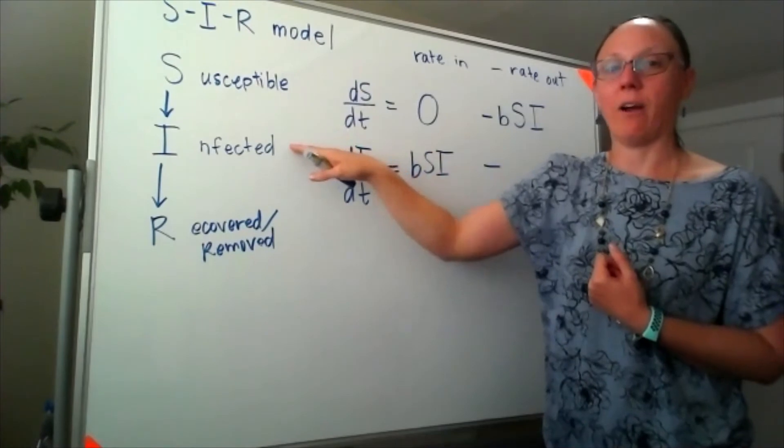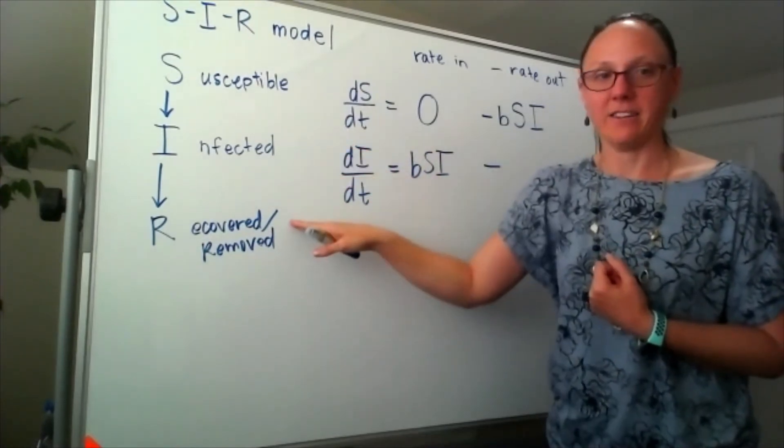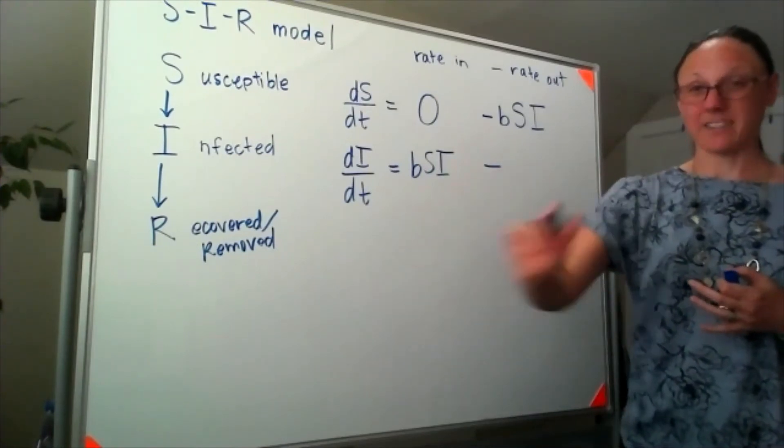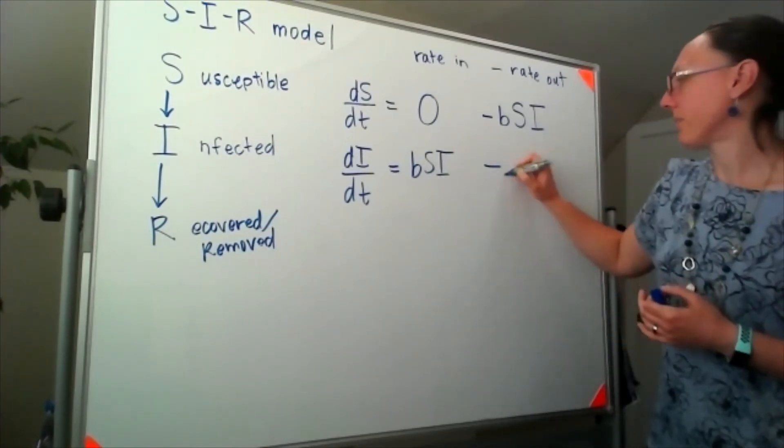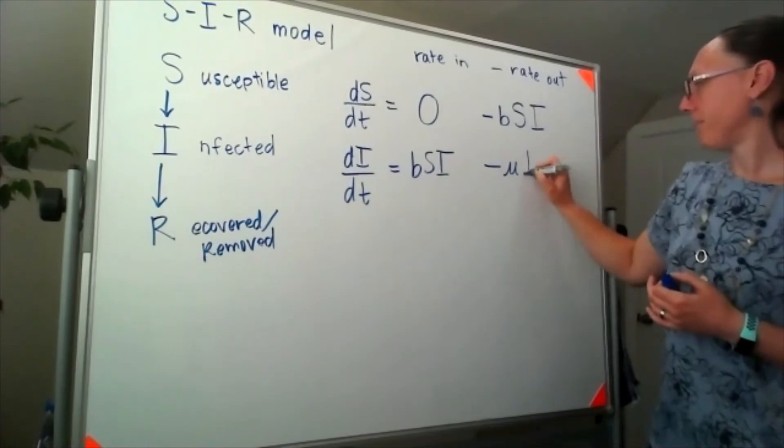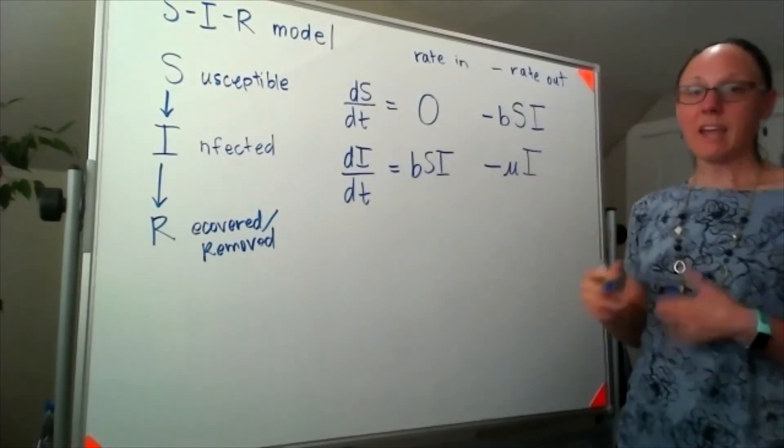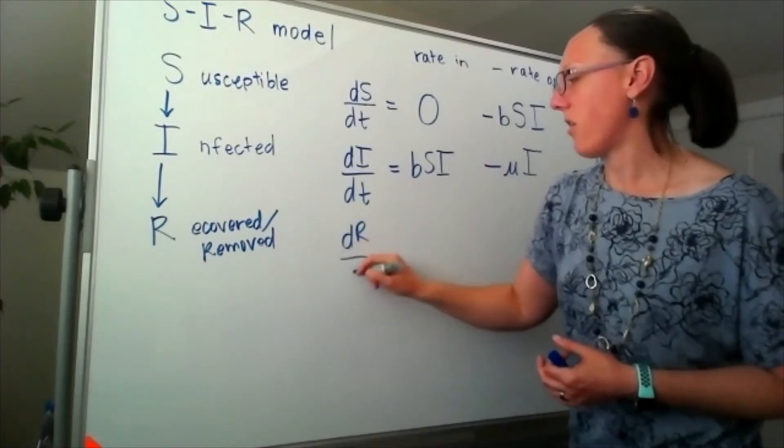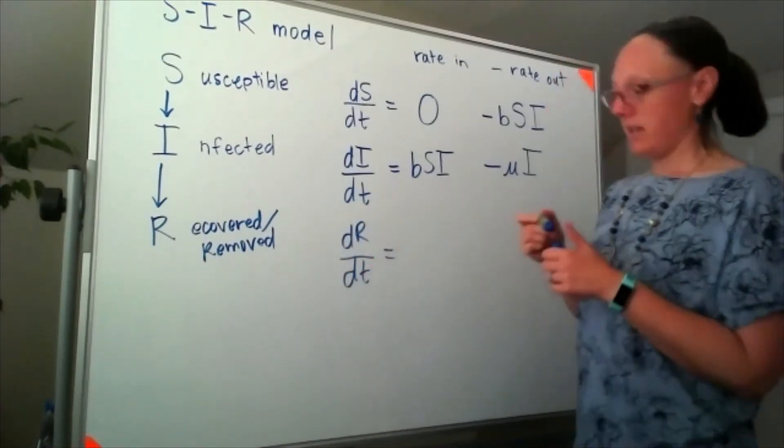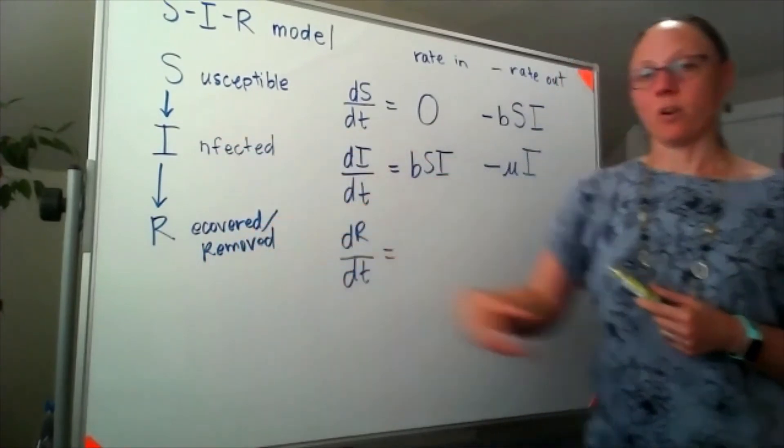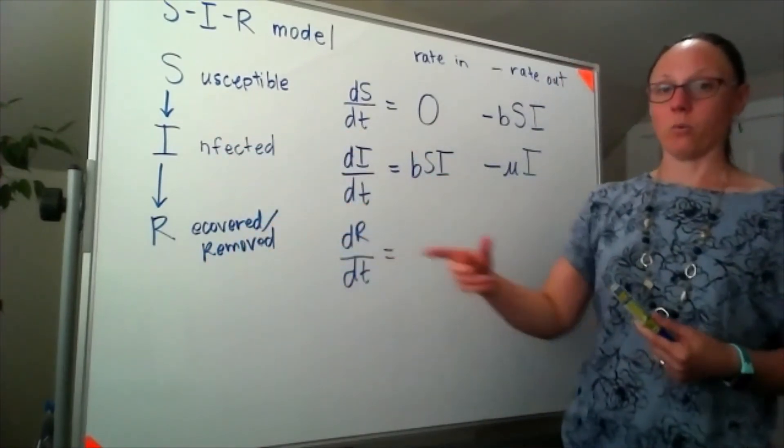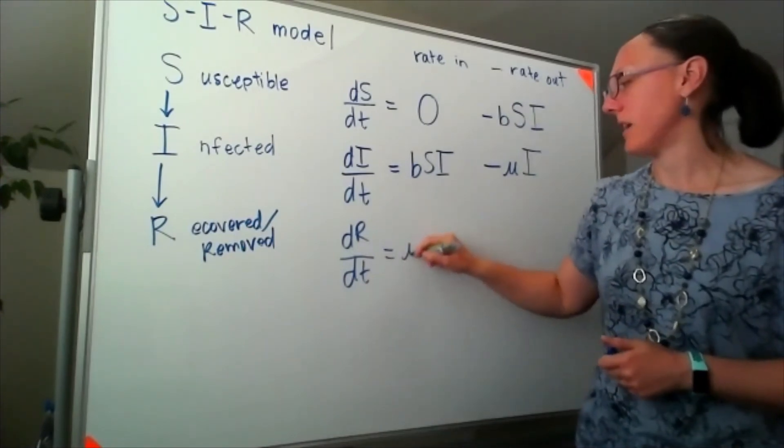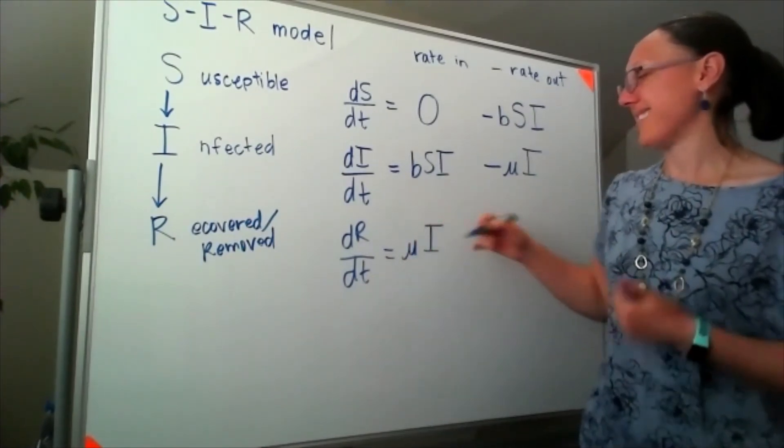The one our textbook chooses is μ (mu). And then that last part is our dR/dt. And what's coming into our group that is recovered or removed is this group right here, meaning that's going to be equal to μ times I.